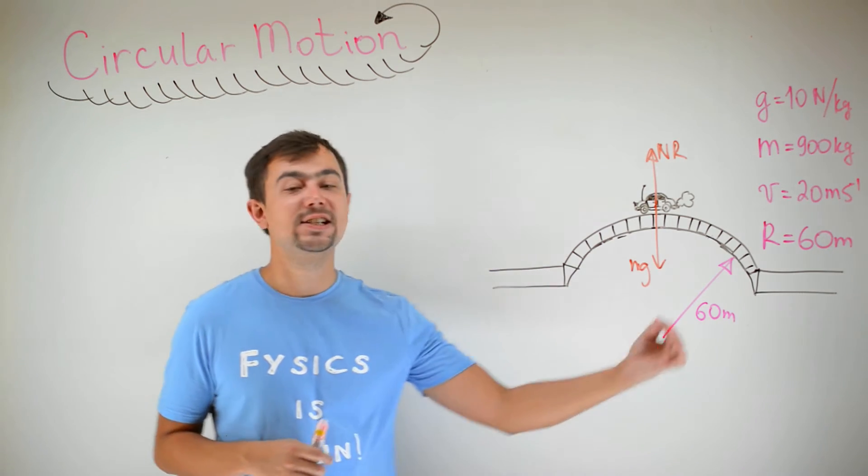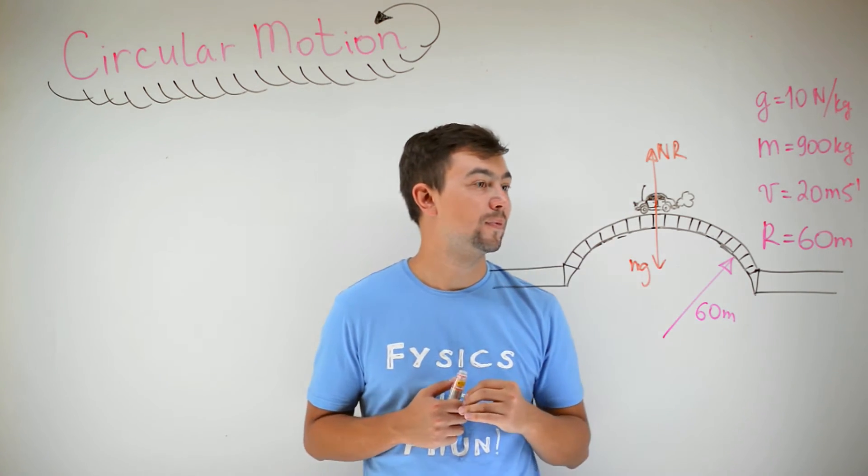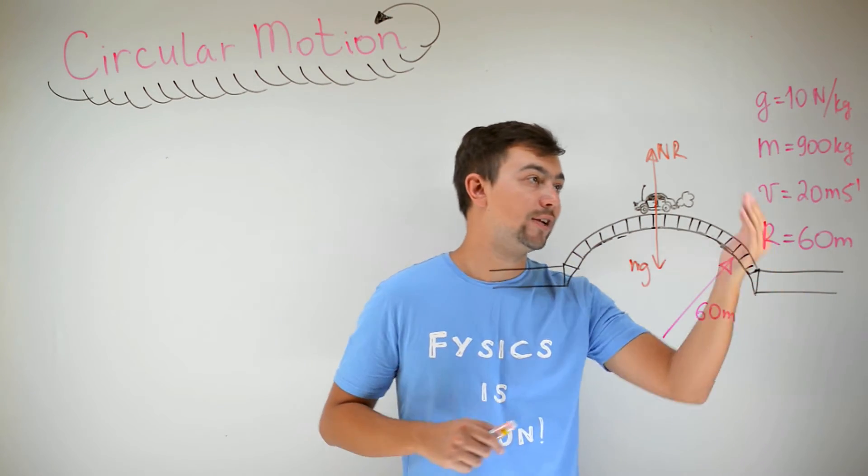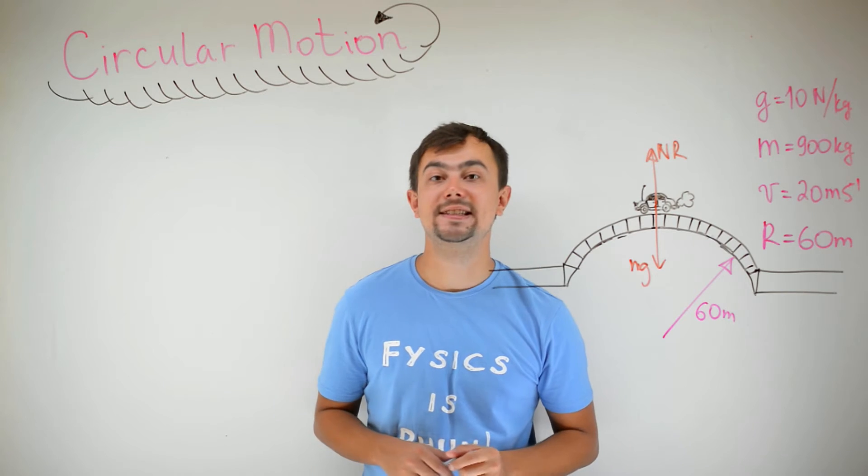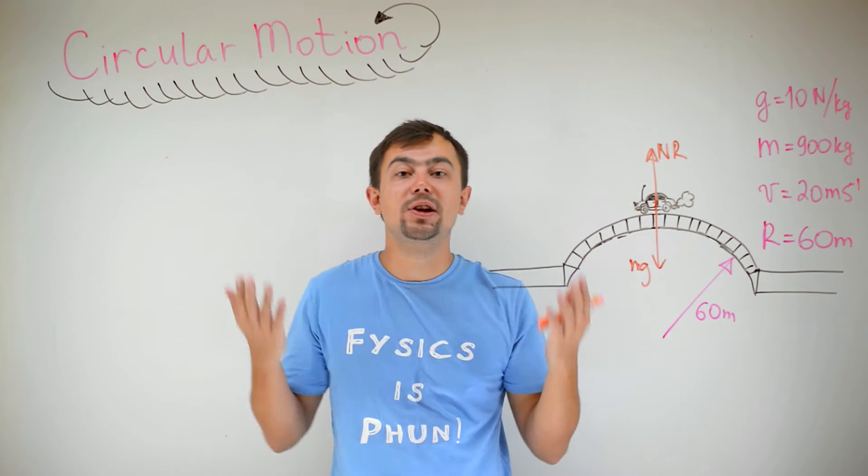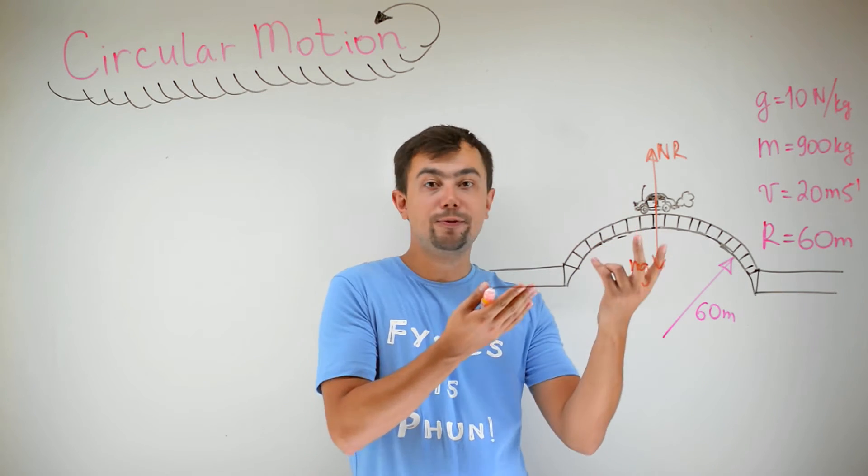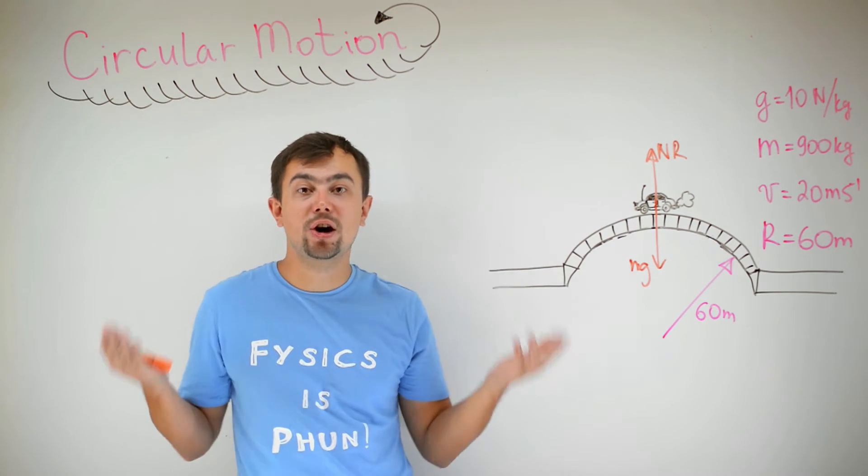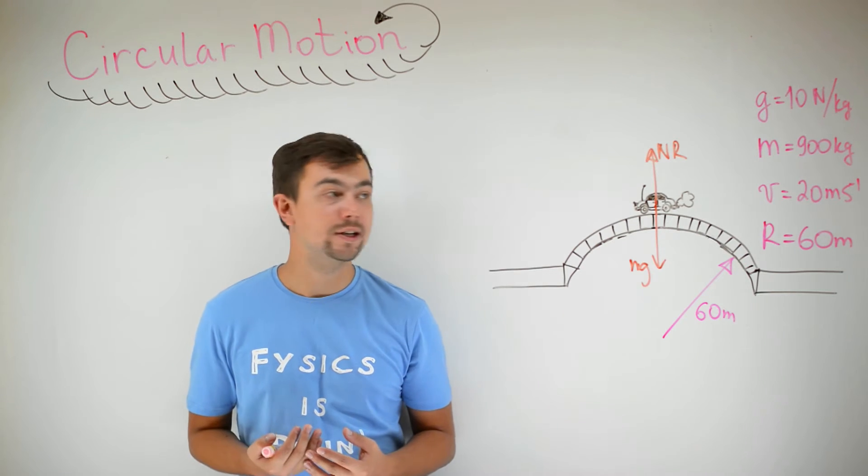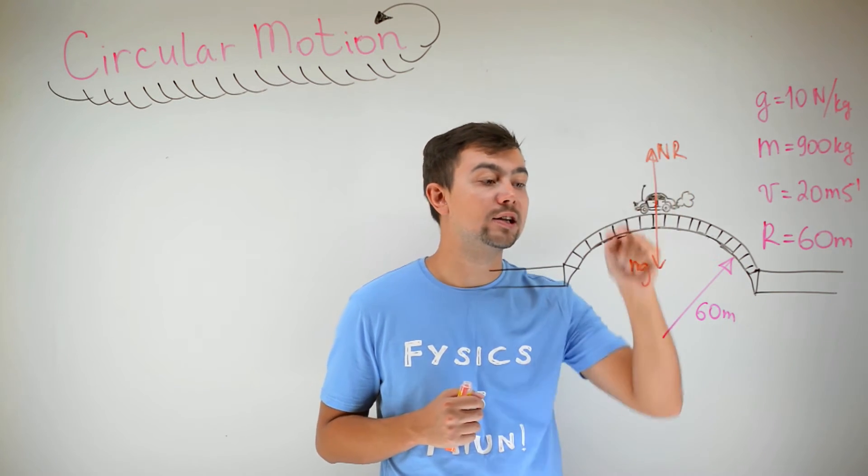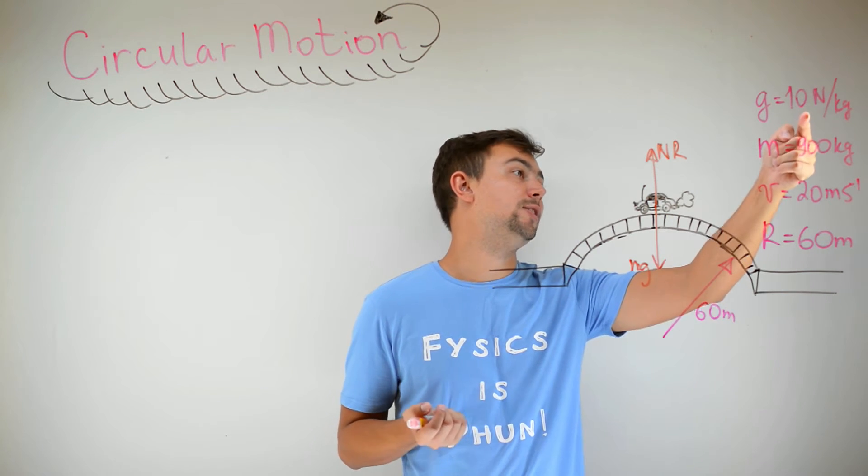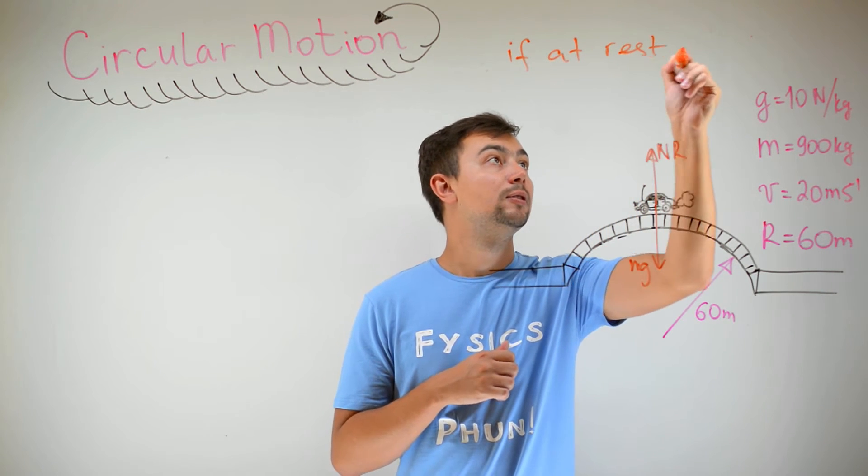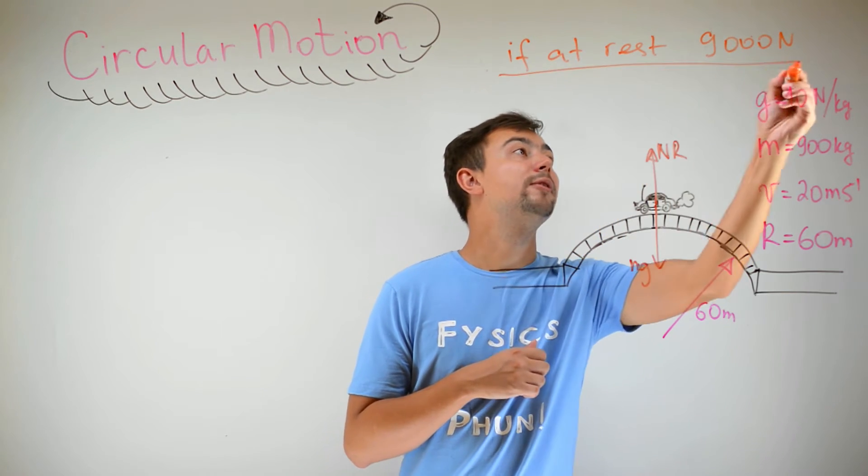An example. A car is travelling over a curved bridge. We need to find the reaction force from the bridge on the car. So, the data is given: 900 kilograms, 20 meters per second, radius of the bridge is 60 meters. First of all, let's imagine if the car is standing still. Well, there are two forces, the weight of the car and the normal reaction. Since there are no other forces and the car is not moving, therefore not accelerating, these two forces are equal. So, the normal reaction is equal to weight, and weight is easy to calculate, 9000 newtons. So, if at rest, 9000 newtons. Let's remember this result.